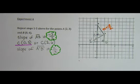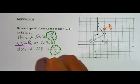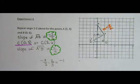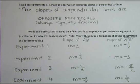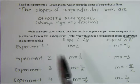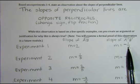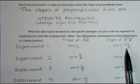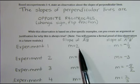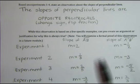We can verify that the slopes are opposite reciprocals by finding the product of the slopes. Since the product of negative 3 over 2 and 2 over 3 is negative 1, we know that the two segments are perpendicular. In this task, we discovered that the slopes of perpendicular lines are opposite reciprocals. This was evident in each of the four experiments. Here we have the slope of the original line segment, and here we have the slope of the image line segment — it is evident that the slope became the opposite reciprocal. The product of the slope of segment AB and the slope of segment A prime B prime is negative 1 in each experiment.